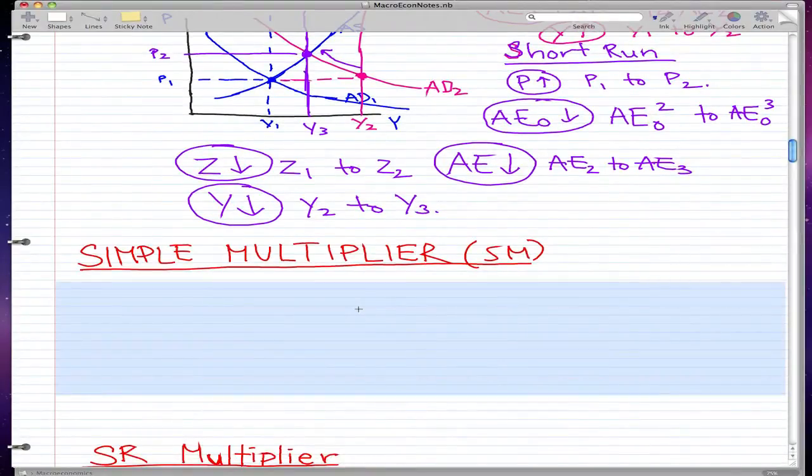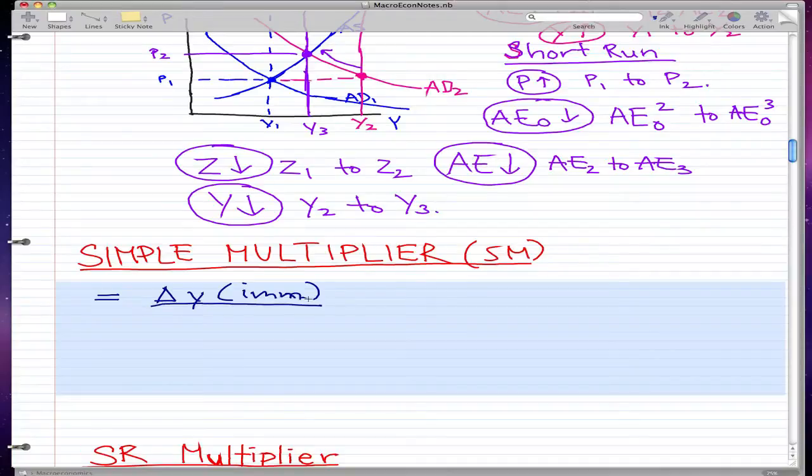In this video, what we're going to talk about is simple multiplier and short run multiplier. So the formula for these two concepts are the change in y, the change in y immediate, which I'll abbreviate to just m, over the change in AE not m, AE not immediate.